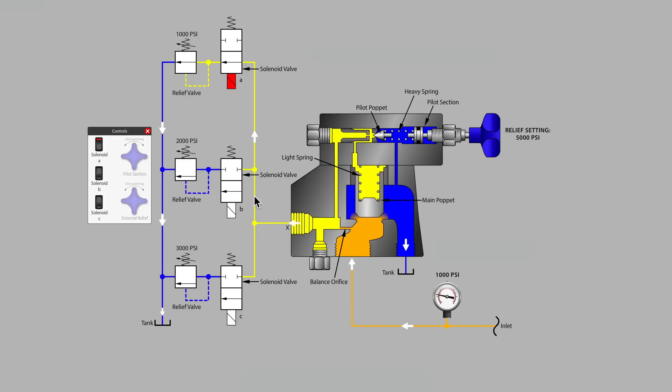...that is oil leaving the relief valve finding an easier path and in so doing unbalancing the pressure above the main poppet to make it easier for flow to return to tank, and that is what is now controlling our system pressure at 1000 psi.